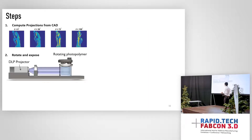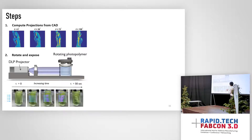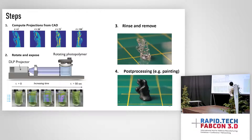In summary: we compute the projections from all different angles, project them into the volume of resin while rotating it, and get your parts in 50 seconds. You take out the part and can do post-processing. If you want stronger material properties, you can do post-curing or other reinforcement. If you want color, you can paint it.